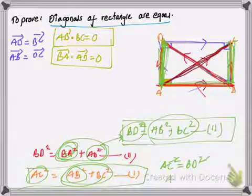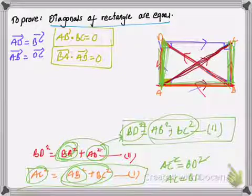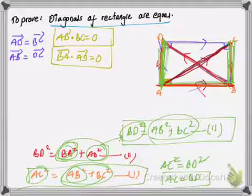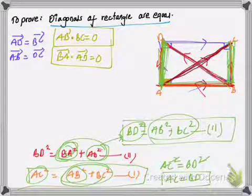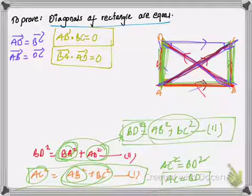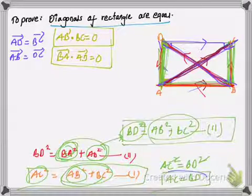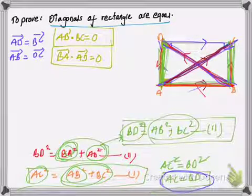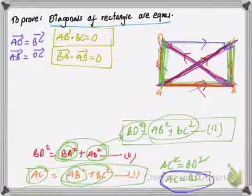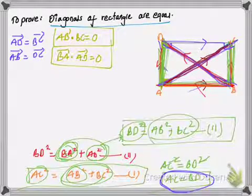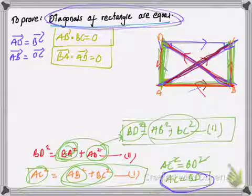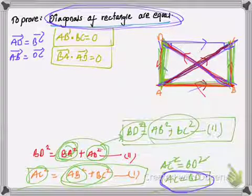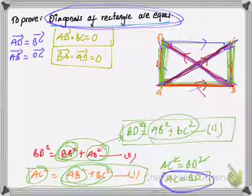We can simply remove the squares and write AC = BD. We already know that AC and BD are the diagonals of rectangle ABCD and they have the same magnitude. Therefore, the diagonals of a rectangle are equal — and we have proved this. I hope it is clear to you, and thanks for watching.